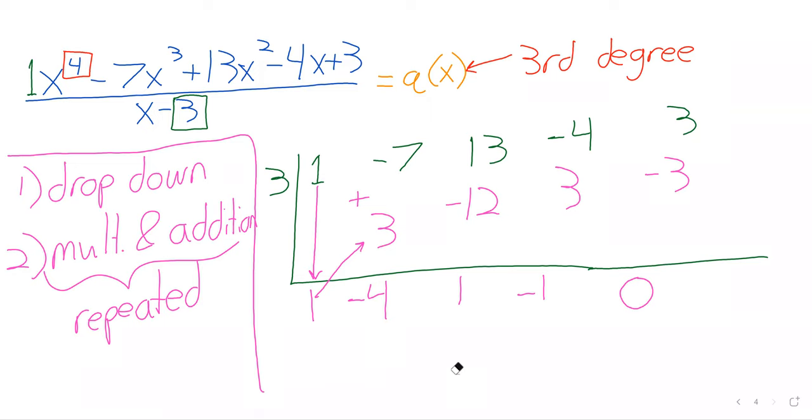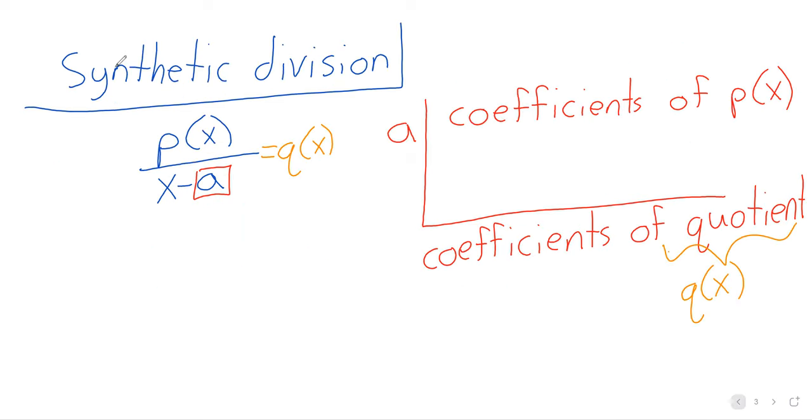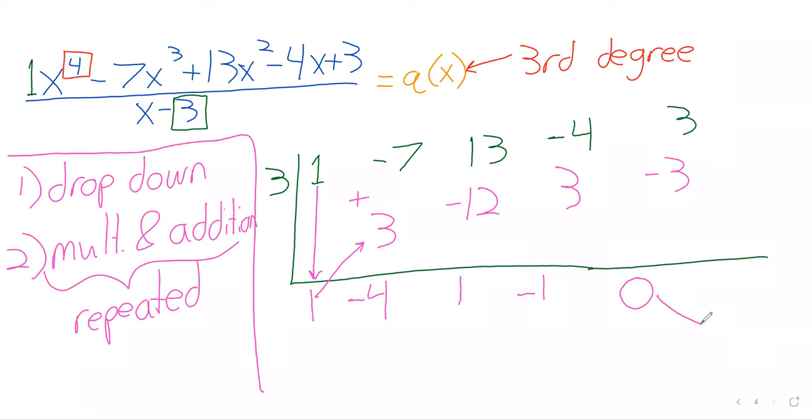This process has a sort of in-built way of checking your work. I already said this, but we're only doing this division in cases where one polynomial evenly divides another. And that should be reflected by a zero. That zero term is a remainder term.